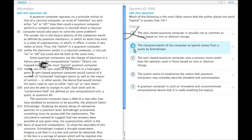B: the characterization of the computer as typical comes from a quote by Schrödinger. So that's another reason you would use quotation marks, but there are no quotes from Schrödinger in this passage.